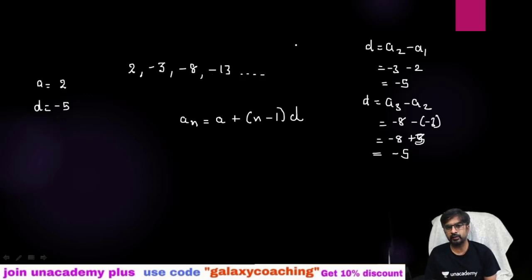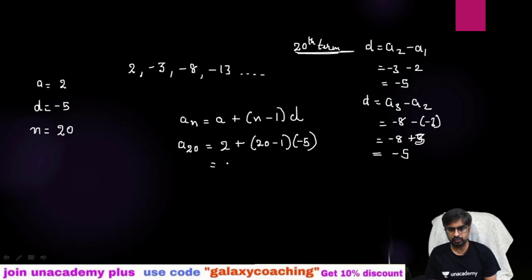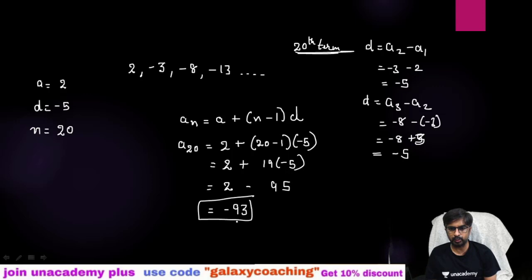Now, find the 20th term of this AP. So N equals 20. A20 equals A plus (N minus 1) into D equals 2 plus 19 into minus 5 equals 2 plus minus 95 equals 2 minus 95 equals minus 93. So minus 93 is your 20th term.